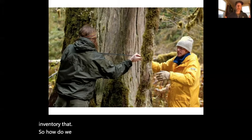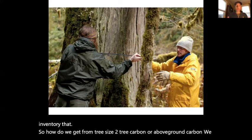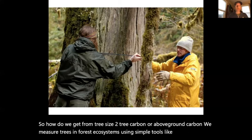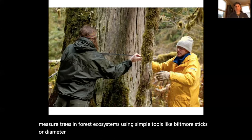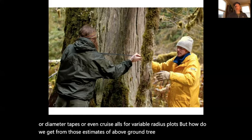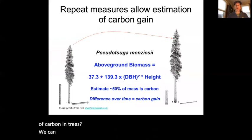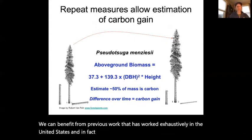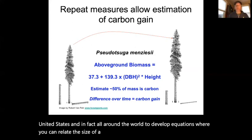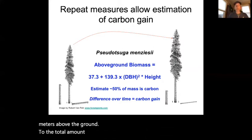How do we get from tree size to tree carbon or above ground carbon? We measure trees in forest ecosystems using simple tools like Biltmore sticks, diameter tapes, or cruise-alls for variable radius plots. Previous work developed equations relating tree size — specifically diameter at approximately 1.37 meters above the ground — to the total amount of mass in that tree.